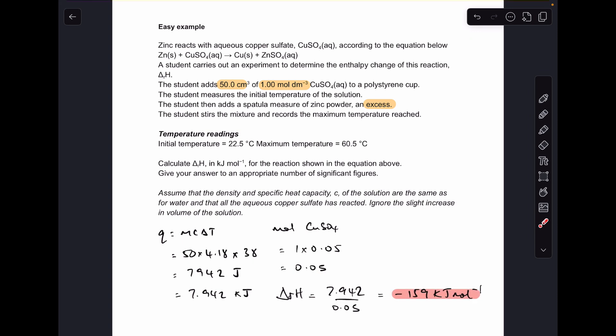And then I turn that into an enthalpy change for the reaction. We take the kilojoules, we divide by the moles. And we get minus, because it's exothermic, temperature went up, 159 kilojoules per mole. I've given my answer to three significant figures. That's appropriate because all of the data is to three significant figures.